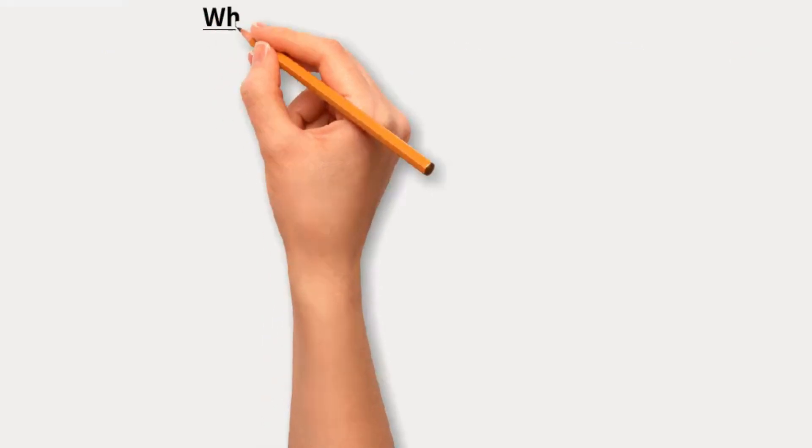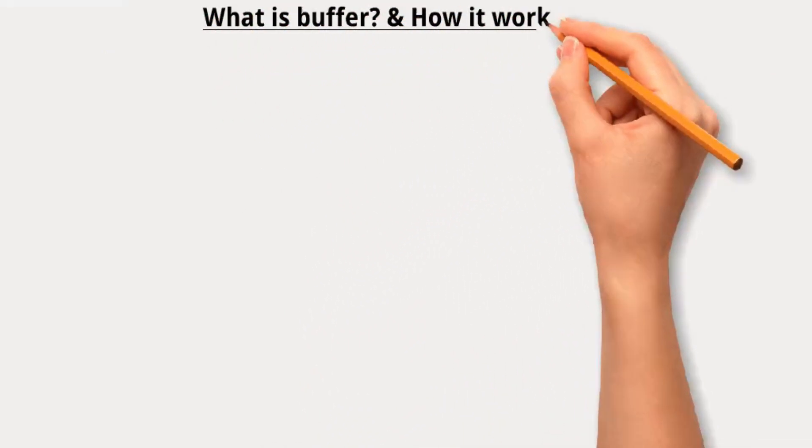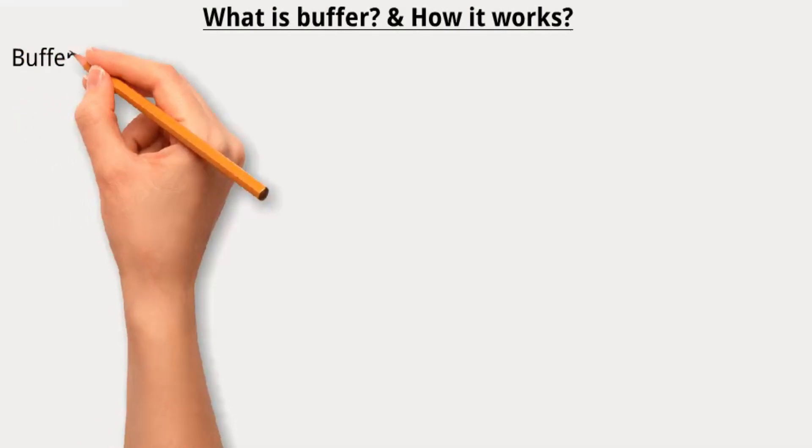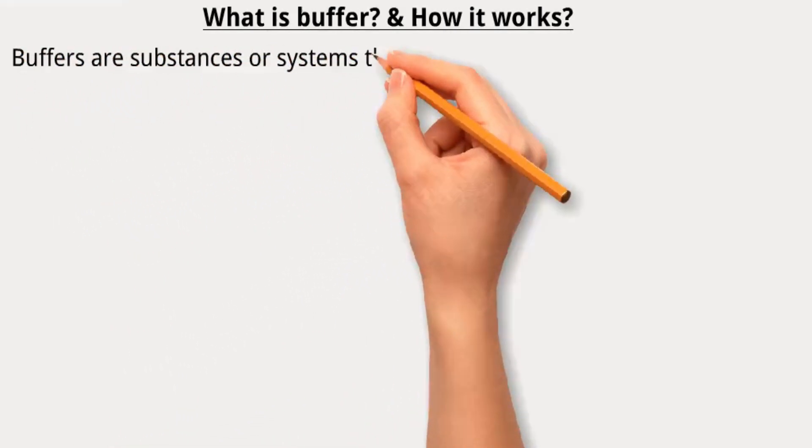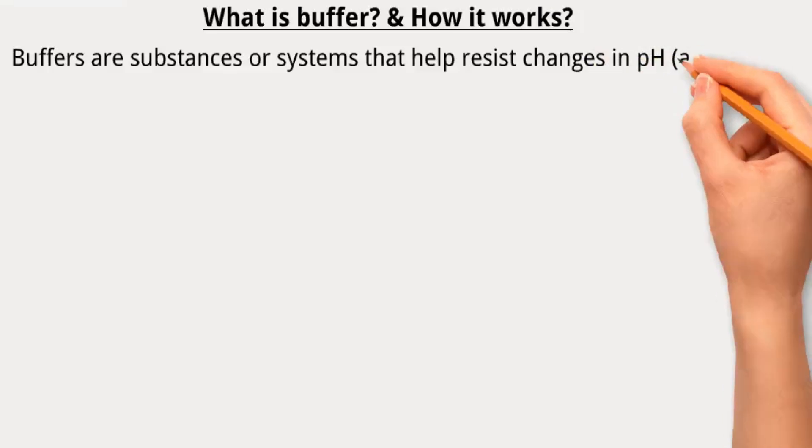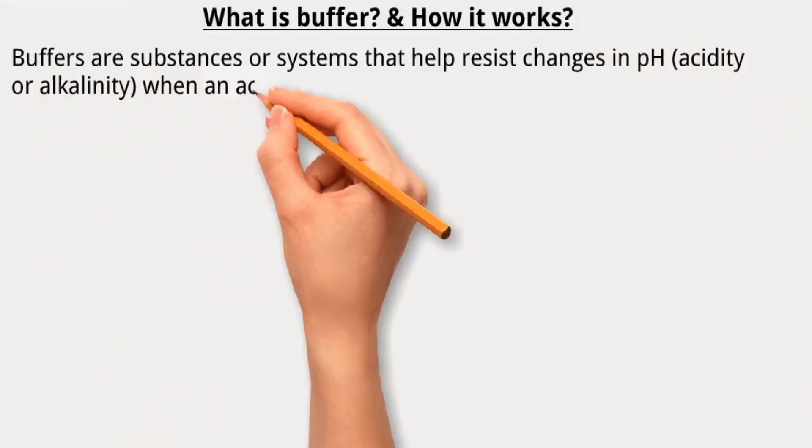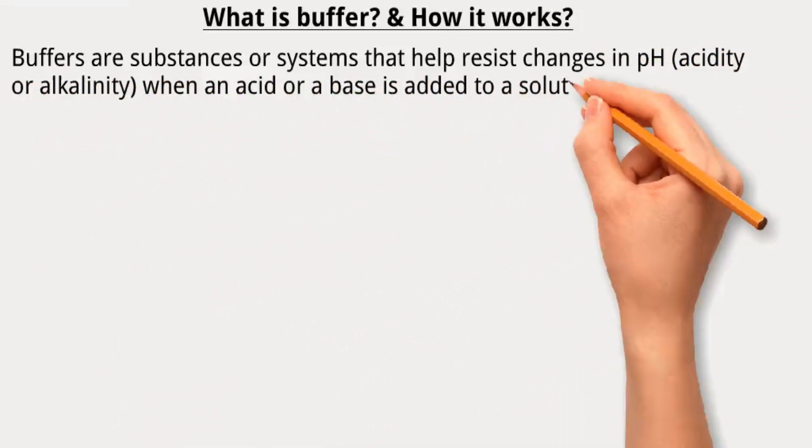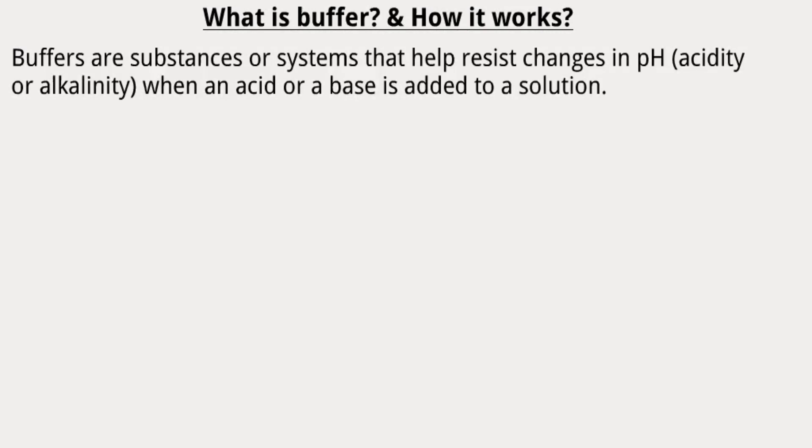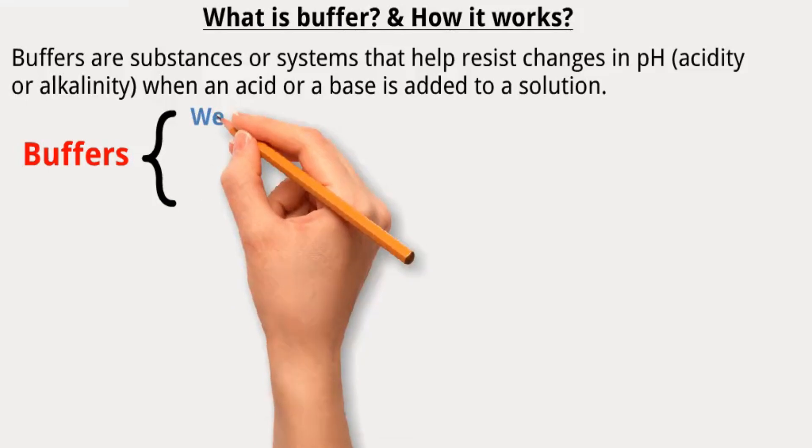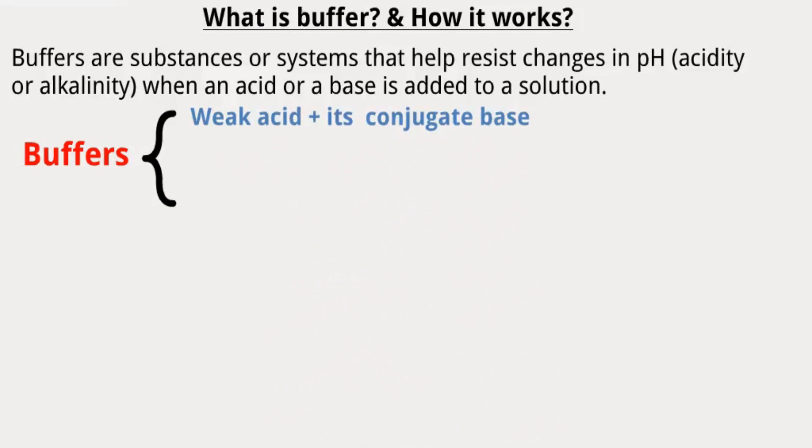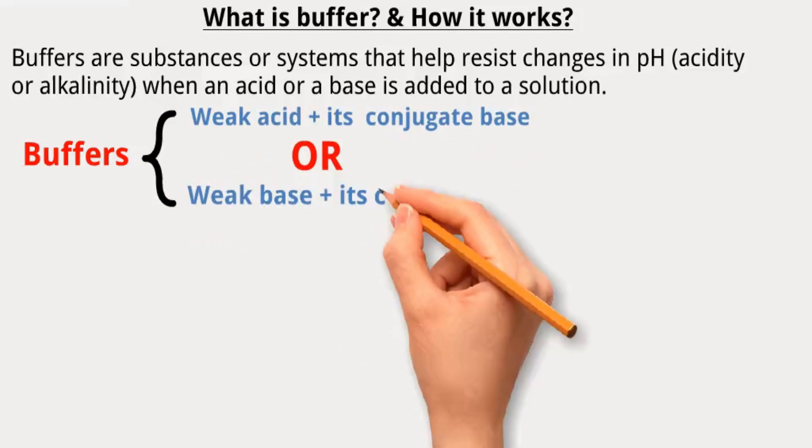Now, let us explain the concept of buffers and how they work. Buffers are substances or systems that help resist changes in pH, acidity or alkalinity, when an acid or a base is added to a solution. They play a crucial role in maintaining the stability of pH levels in various biological and chemical systems. Buffers are usually a combination of a weak acid and its corresponding conjugate base or a weak base and its conjugate acid.